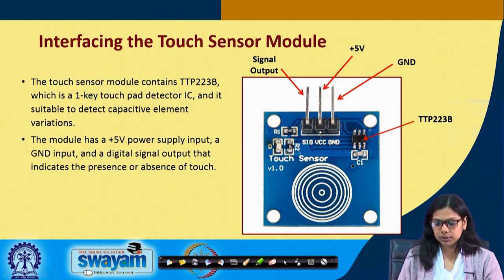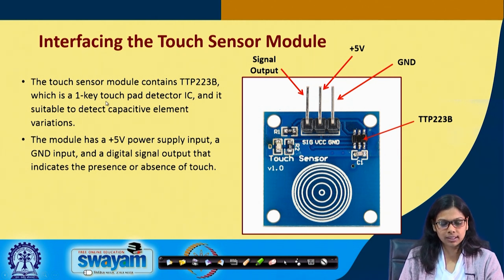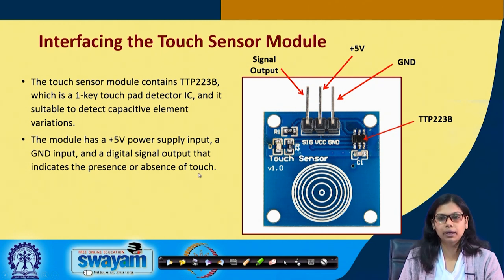This is the touch sensor we have used. There is VCC, ground, and the signal output. This is TTP223B. If you touch either this part or from below, it will work. The touch sensor module contains the TTP223B, which is a one-key touchpad detector IC — an integrated chip suitable to detect capacitive element variations. The module has a 5-volt power supply input, a ground, and a digital signal output that indicates the presence or absence of touch.